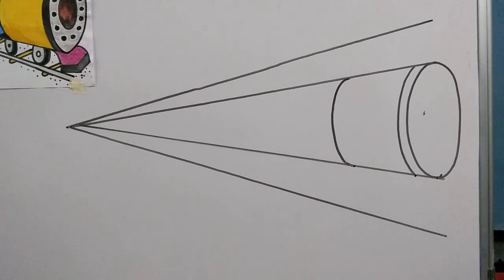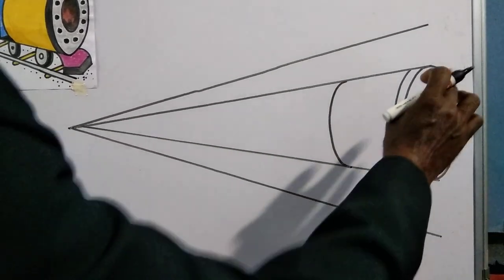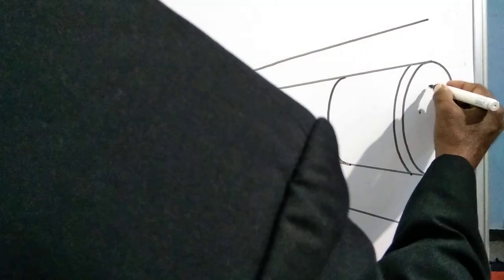Step No. 6. Inside the oval draw one more small oval.